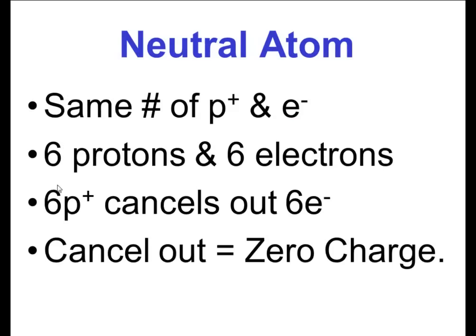In a neutral atom, we're going to have the same number of protons and electrons. If I have six protons and six electrons, I have a neutral atom. If I have six protons, they cancel out the six electrons. Let's picture one, two, three protons that are positive charges.